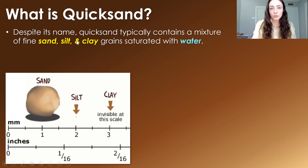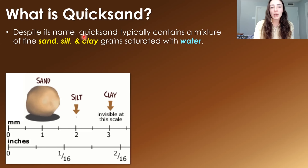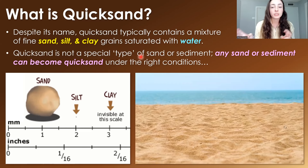The actual composition of these sediment grains doesn't seem to matter that much. Quicksand can occur on beaches with more quartz-rich sand, and it can also occur in some soils, so it doesn't seem to matter the composition as much as just the mixture of sizes of grains. Therefore, quicksand is not really a special type of sand or composition of sand or sediment — it's really just any sand or sediment that becomes saturated enough with water under the right conditions.